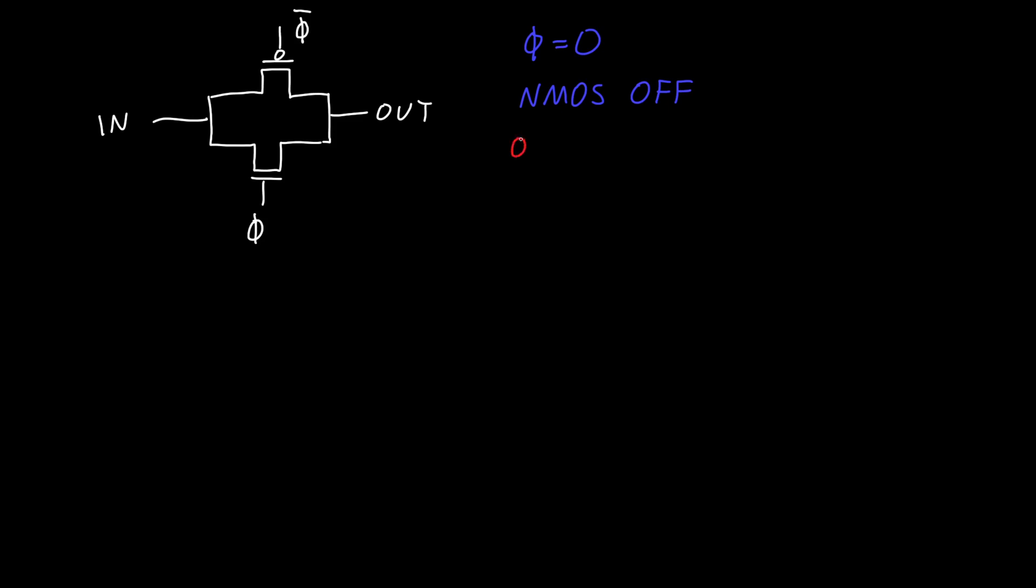And similarly, knot phi, so phi with a little over bar, will be equal to one. And so our PMOS is off. And so this gate does exactly what we want it to when phi is equal to zero, the input is isolated from the output. So it acts just like an open circuit, our input is isolated from our output.